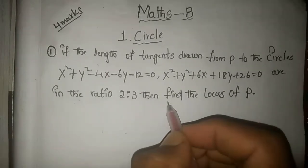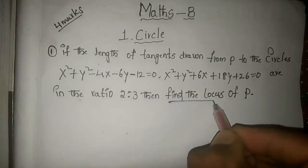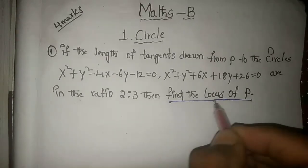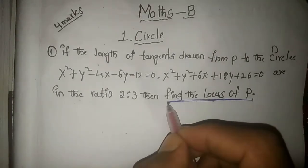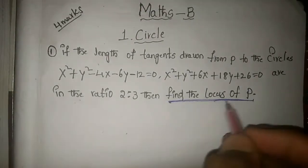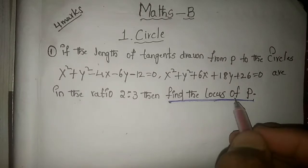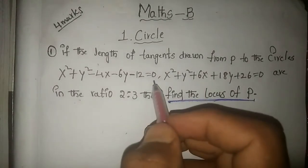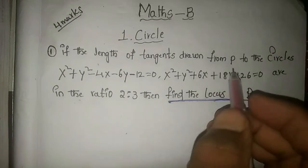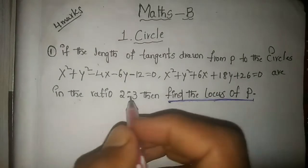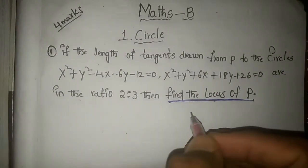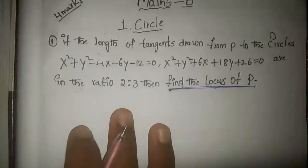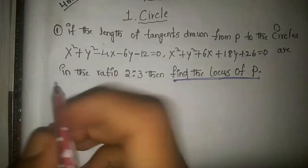The question asks us to find the locus of P. Two circles are given, and from point P tangents are drawn to each circle in a given ratio. We need to find the locus of P. Let's solve this problem.